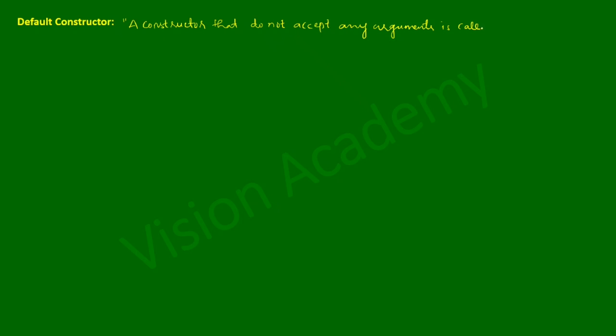Hello and welcome to Vision Academy. In this video we are going to learn about the default constructor. A constructor that does not accept any arguments is called a default constructor. It is also called a zero argument constructor.